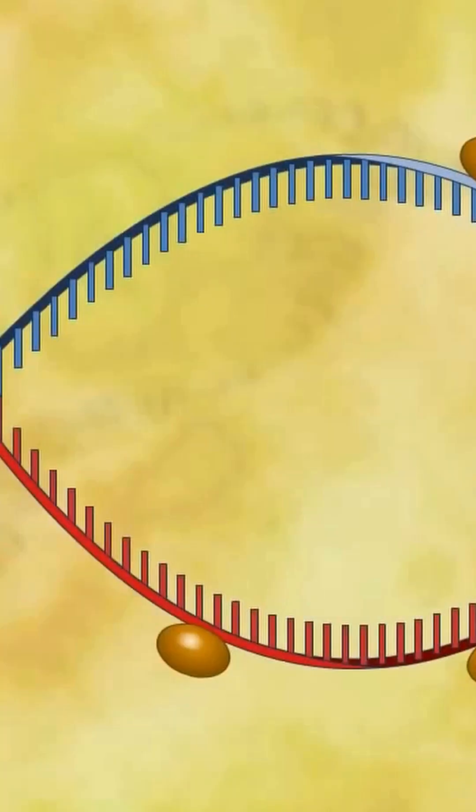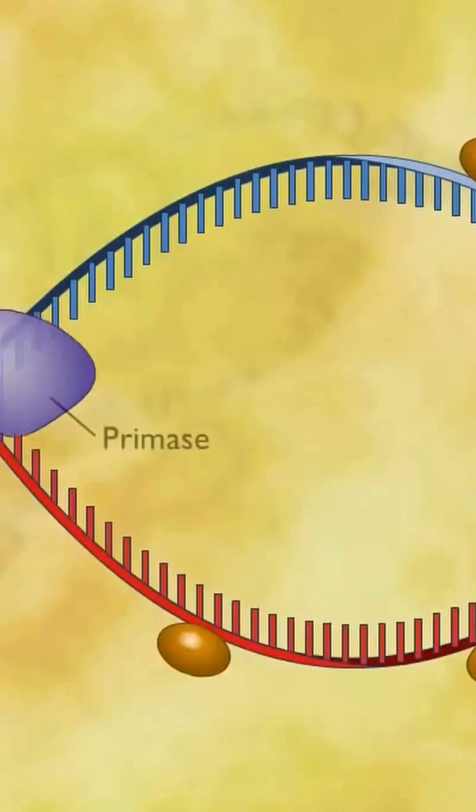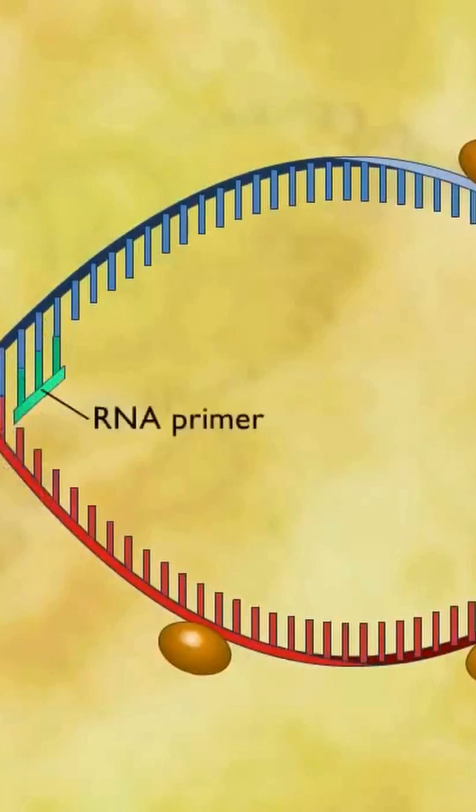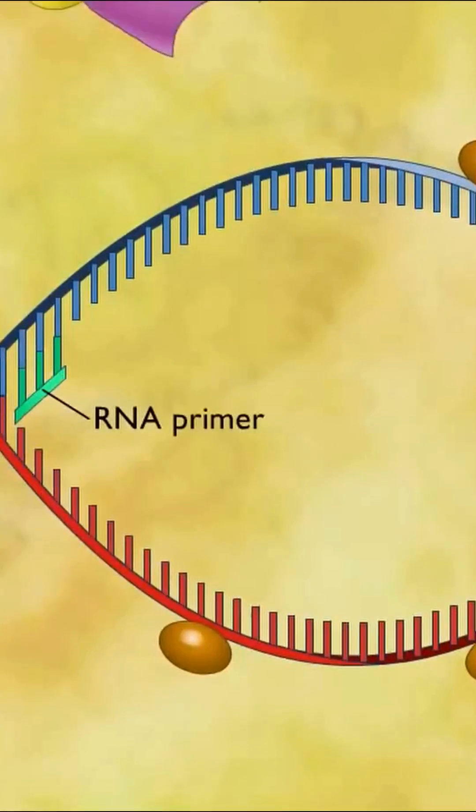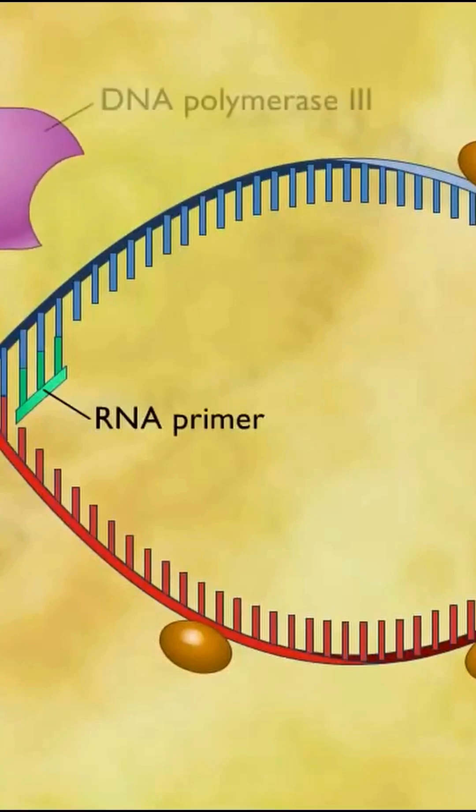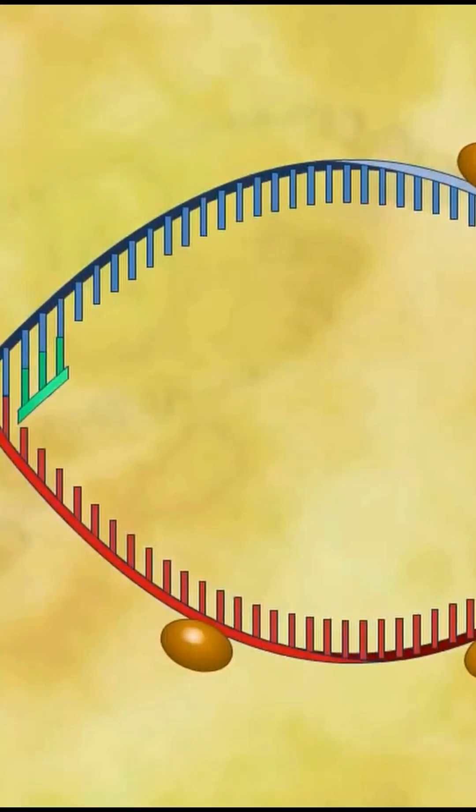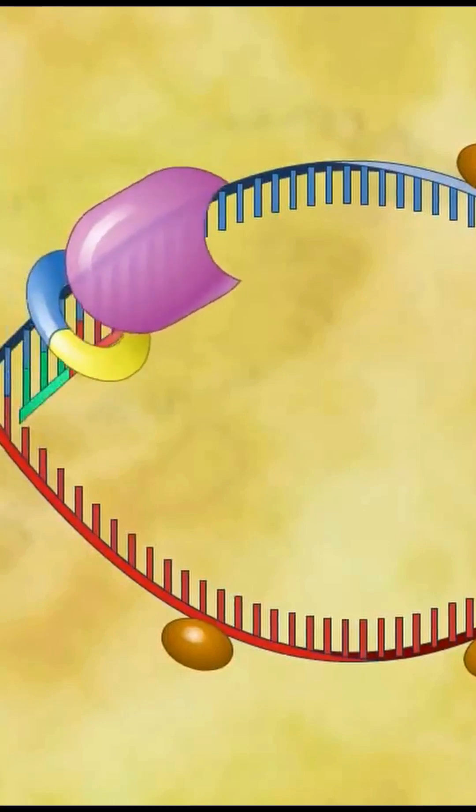Therefore, an RNA polymerase called a primase constructs an RNA primer, a sequence of about 10 nucleotides complementary to the parent DNA. DNA polymerase 3 can then add deoxyribonucleotides to synthesize the new complementary strand of DNA.